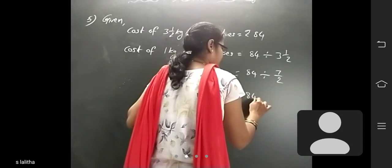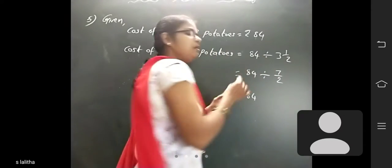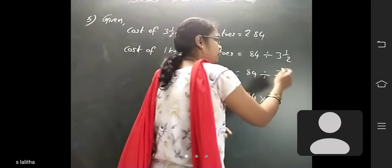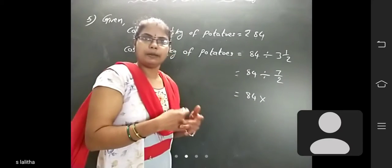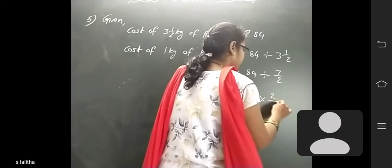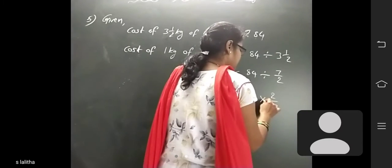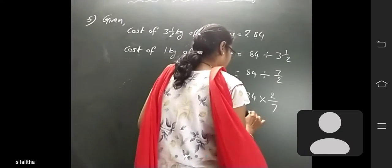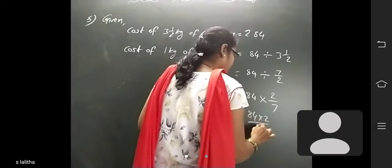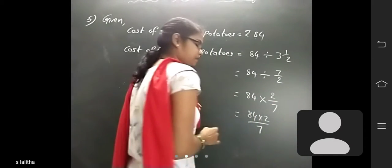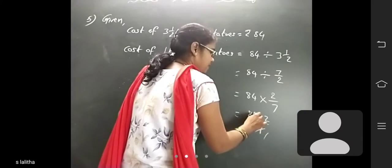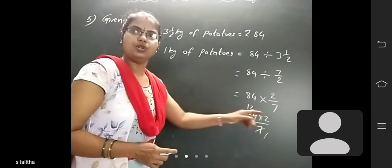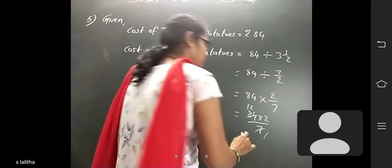So 84 divided by 7/2. The division is converted into multiplication, and this fraction becomes its reciprocal, that means 2 by 7. So 84 into 2 by 7: 84 divided by 7 is 12, and 12 into 2 is 24.